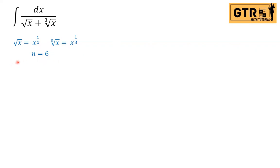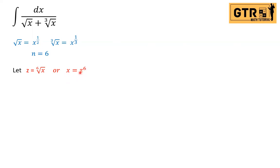We let z equal the sixth root of x. Solving for x gives x equals z to the sixth. Taking the differential: dx equals six z to the fifth dz.